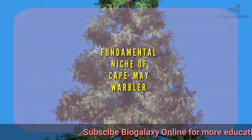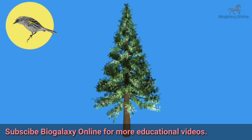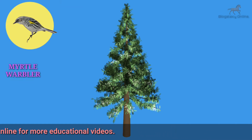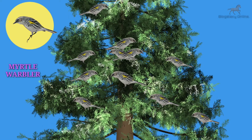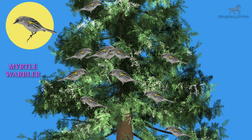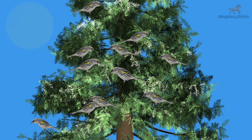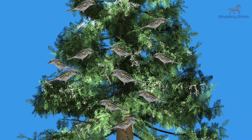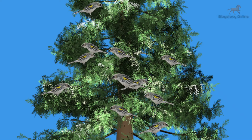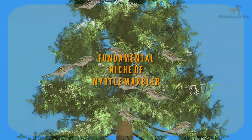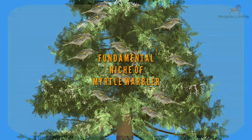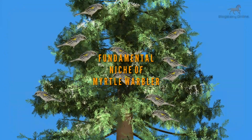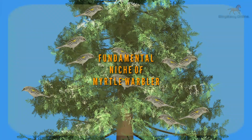Now let us imagine that another species of warbler called Myrtle warbler lives in a pine tree within a coniferous forest. In absence of any other species of birds, it occupies all the branches of the tree. So the pre-competitive niche of Myrtle warbler is its fundamental niche — this species can use all the resources freely when there is no competition.